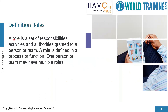A role is a set of responsibilities, activities, and authorities granted to a person or a team. It is defined in a process or a function, and one person or team may have multiple roles. In the software lifecycle, several roles need to be performed. SAM provides guidelines and examples of roles and their descriptions. These are not exhaustive nor prescriptive, and roles will need to be combined or even separated at times. Therefore, organizations should apply this guidance carefully to suit their own structure and objectives. Roles should not be confused with job titles — they are not the same. Each organization has its own job titles and job descriptions, and individuals holding these job titles can perform one or more of these roles.